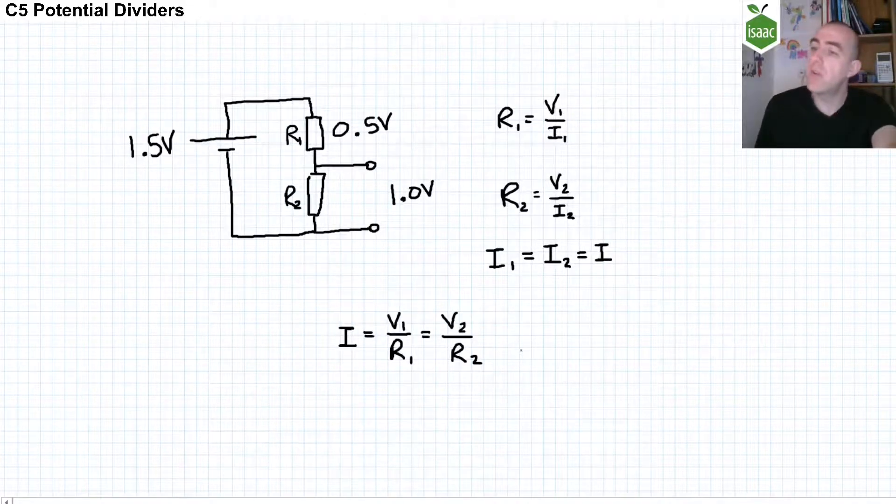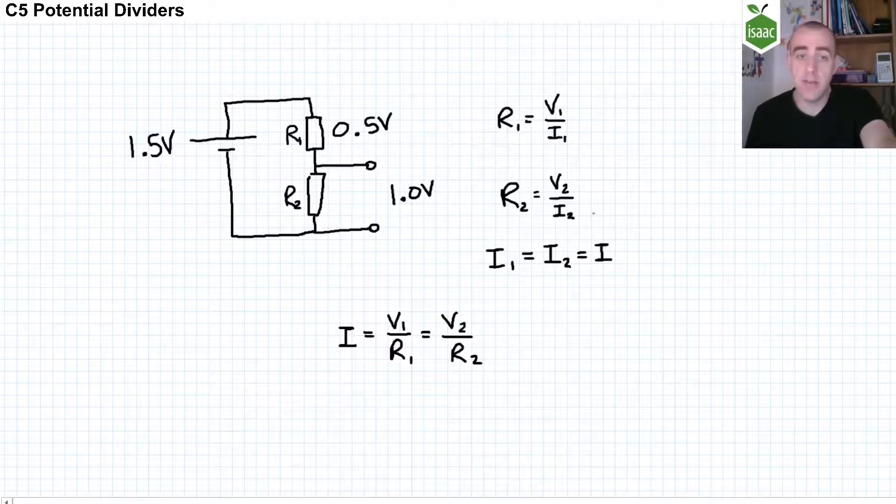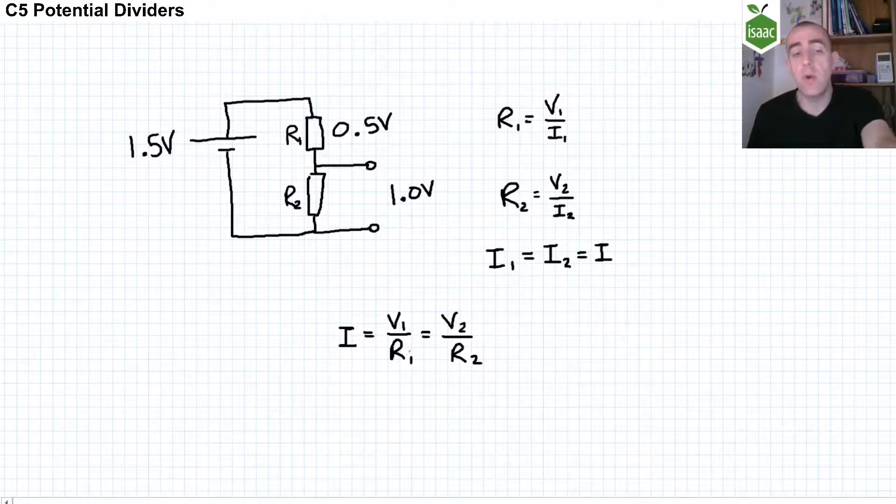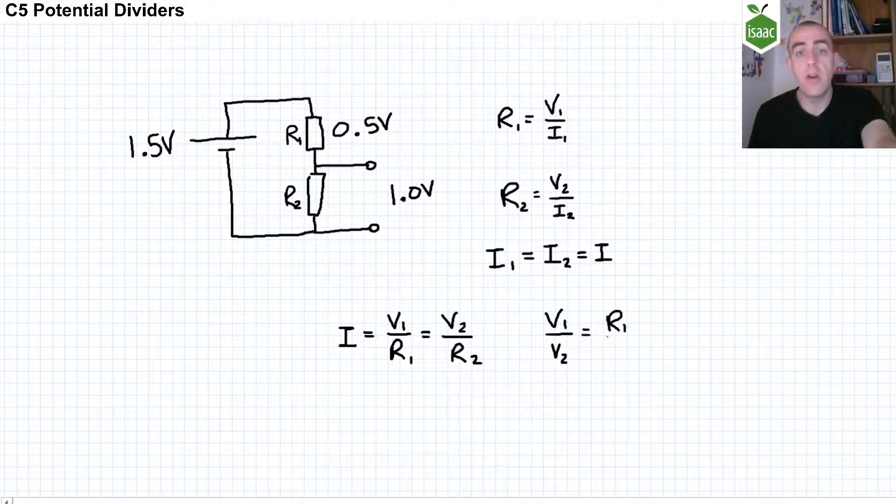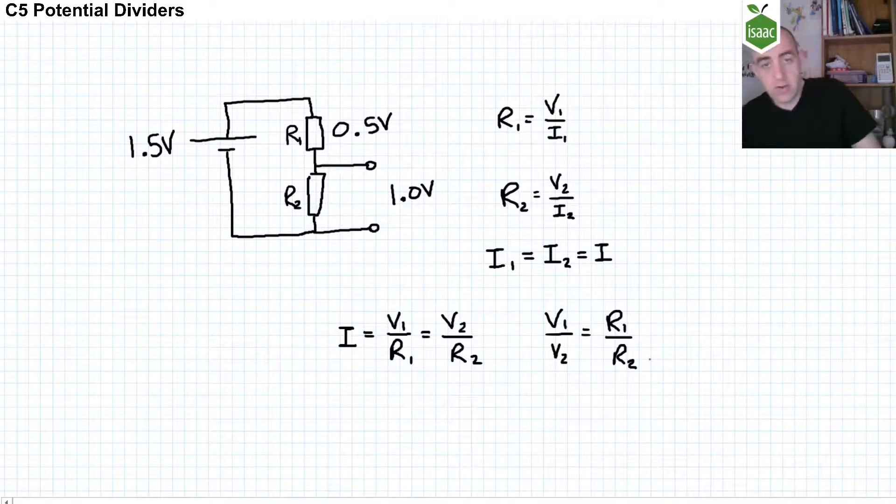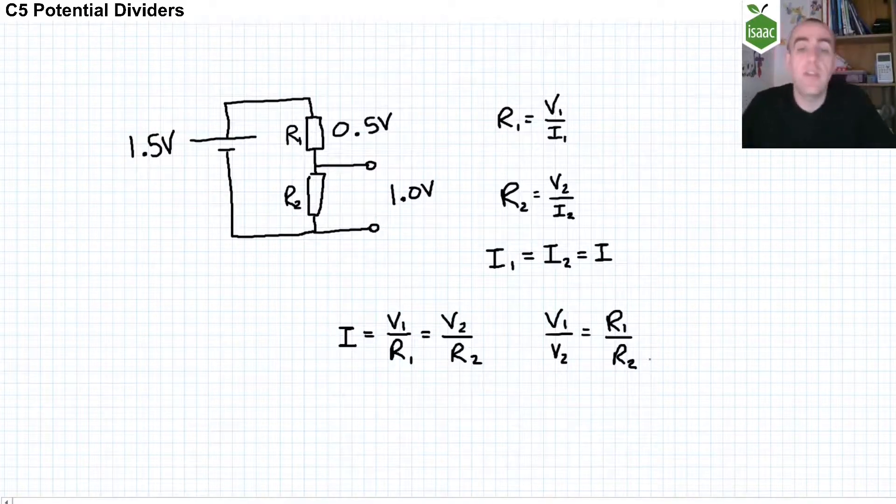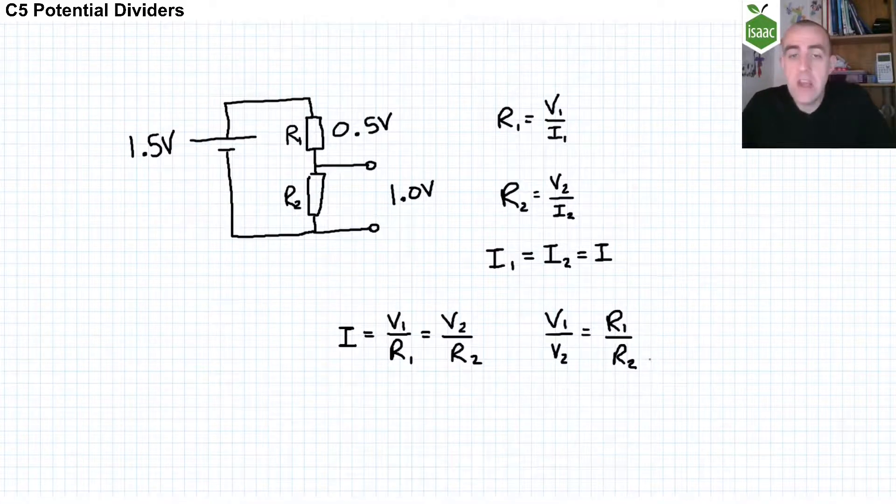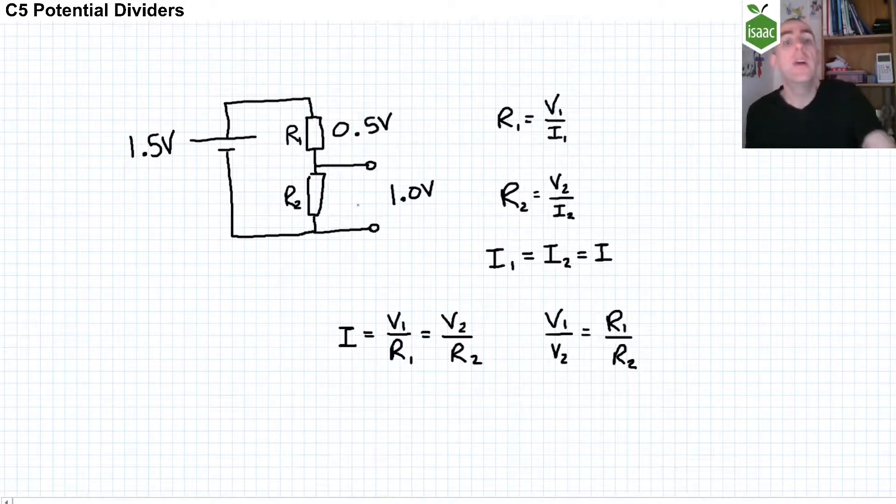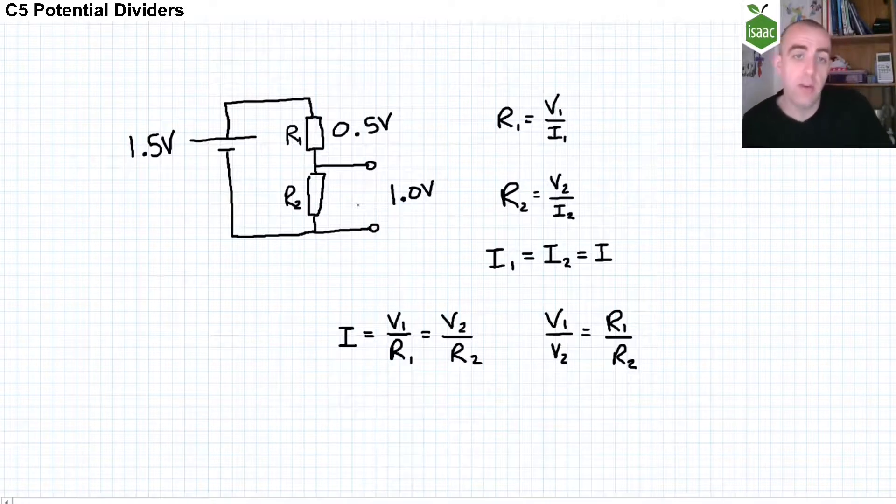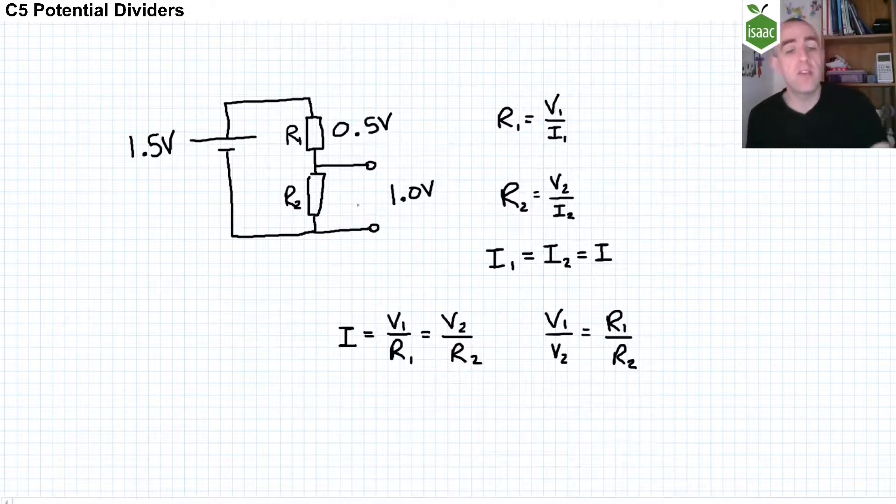Now if we take those first two equations and we arrange them so that I is the subject, as I is the same for both of them, we can write that V1 over R1 is equal to V2 over R2. And another thing we can write is that V1 over V2 is equal to R1 over R2. This is just gathering potential differences to one side and resistances to the other. In other words, the ratio of resistances is equal to the ratio of potential differences. If we want the bottom resistor to have twice the potential difference across it than the top resistor, then it must have twice the resistance.